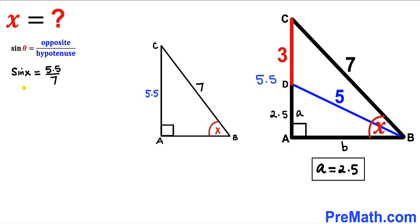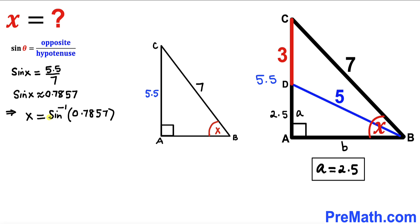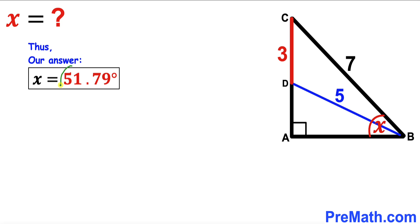Sine of X is approximately equal to 0.7857. Therefore X can be written as the inverse sine of 0.7857. Using a scientific calculator, our X value is approximately equal to 51.79 degrees. So after all the calculations and manipulations, our angle X value turns out to be 51.79 degrees. That's our final answer.